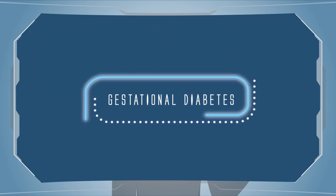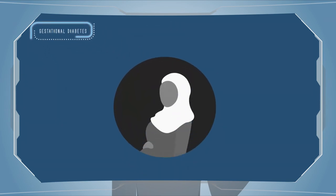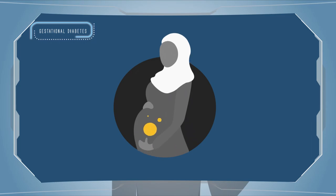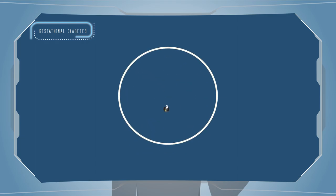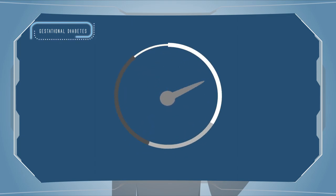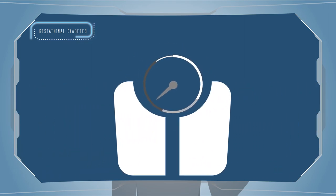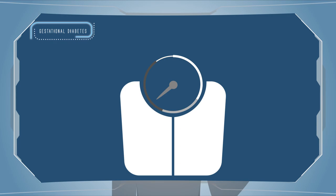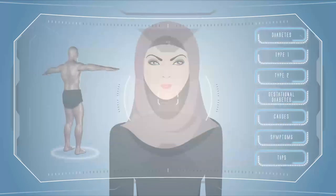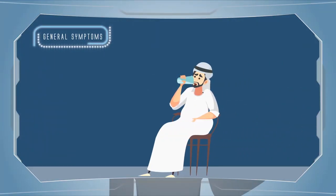Causes for Gestational Diabetes: Gestational diabetes is the result of hormonal changes during pregnancy, which can cause high blood sugar. Women who are overweight when they get pregnant, or who gain too much weight during pregnancy, are more prone to get gestational diabetes.